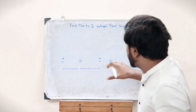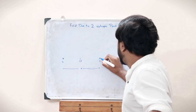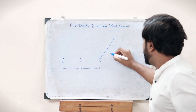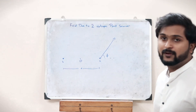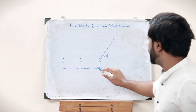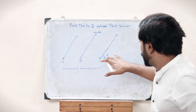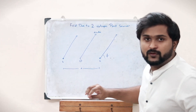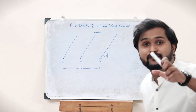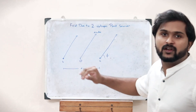Now let us assume that these two sources have a particular radiation at an angle phi. If this is the plane, then the radiation happens at an angle phi. Therefore, if this angle is phi, the corresponding angle on the other side will also be phi — both sources have radiation at angle phi.